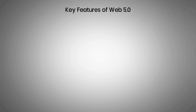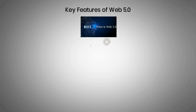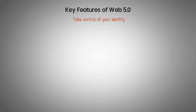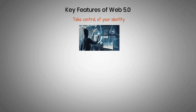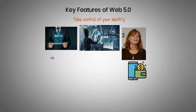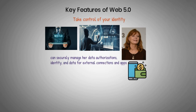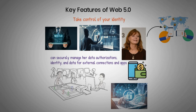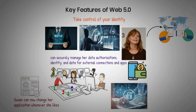Key features of Web 5.0: two core features are currently being addressed — the ability to control your identity and the ability to own all of your data. Your identity and data are now owned by corporations and third parties within the current web. For example, Susan has a digital wallet that can securely manage her data authorizations, identity, and general data for external connections and apps. She uses the wallet to sign into a non-centralized social networking application. Because this application is connected to her identity, she doesn't need to create a profile. All connections, posts, and relationships made through the app are saved on Susan's decentralized web node. Susan can now change her application whenever she likes, and her social persona would be with her at all times.